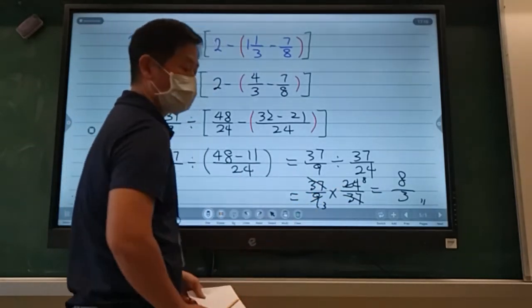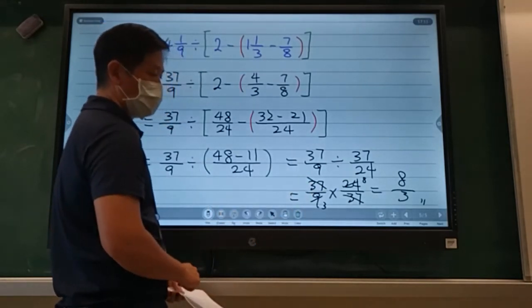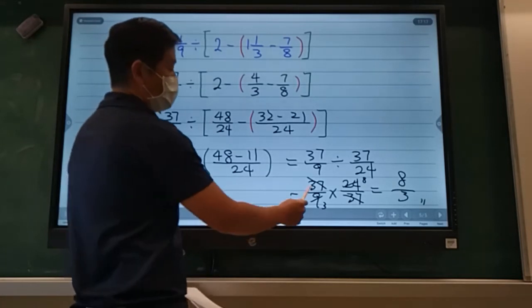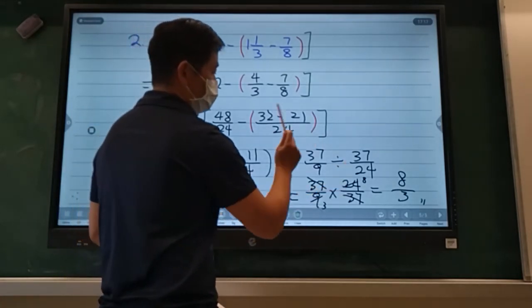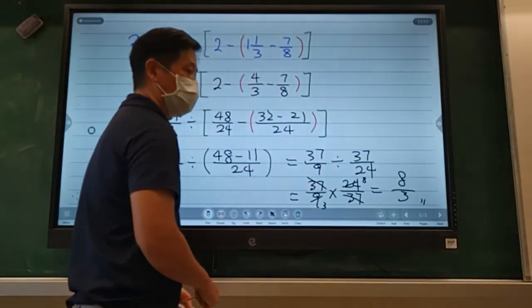We can cancel that out right away and reduce 9 and 24 using 3 as our common factor. 3 goes in 9 three times, 3 goes in 24 eight times. And when you multiply it out, you will get 8 over 3.